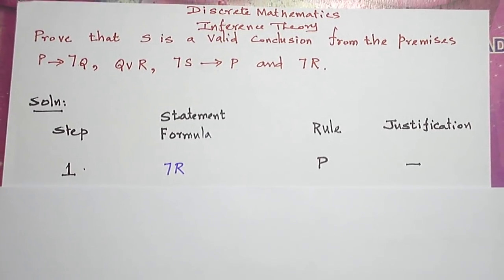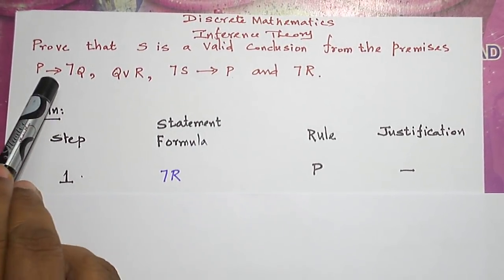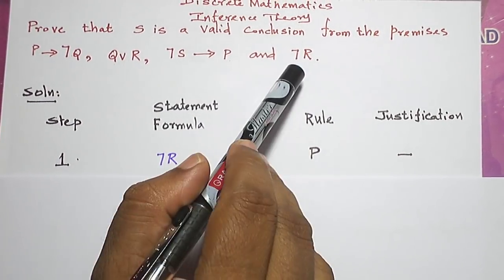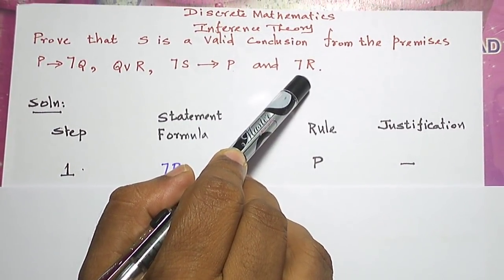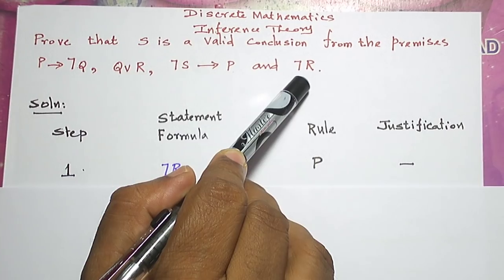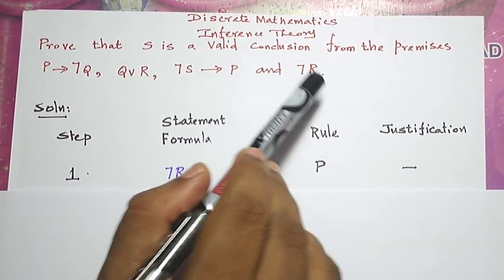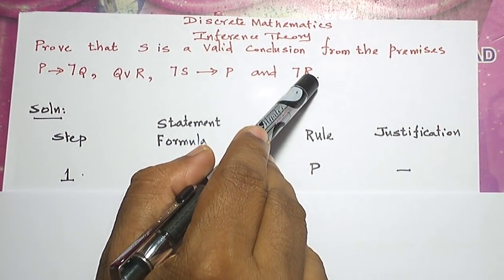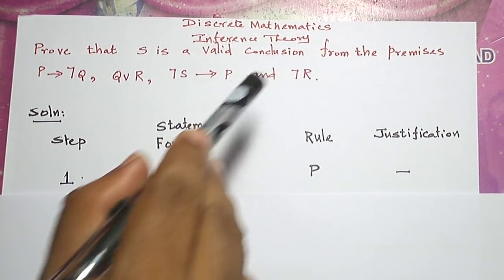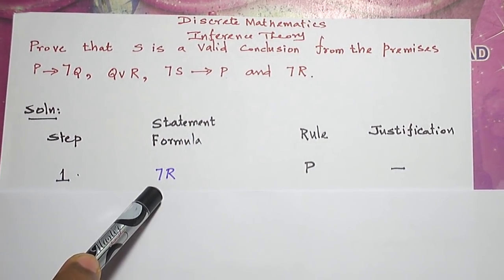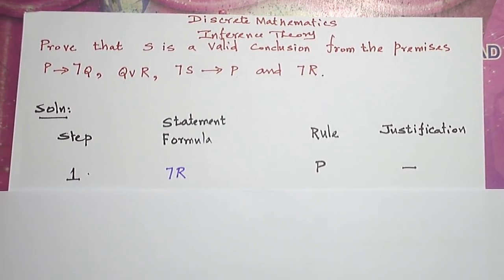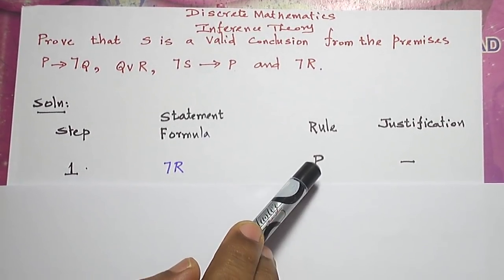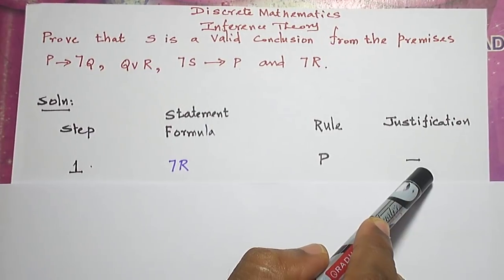Let me start the problem with a simple statement formula. The fourth premise, negation R, has only the negation connective — no or-connective or conditional connective. So let me start with negation R. Taking the given premise means introducing a premise, which is done using rule P. Once I use rule P, I need not justify anything, so I put dash.